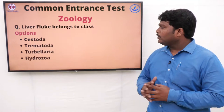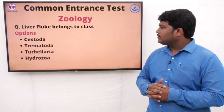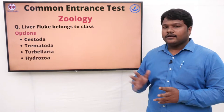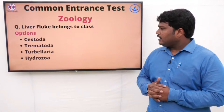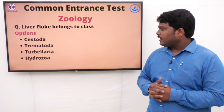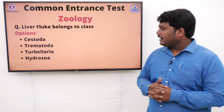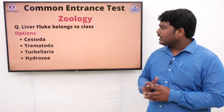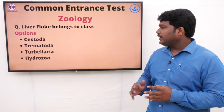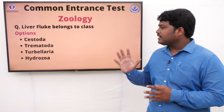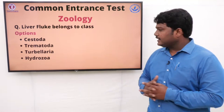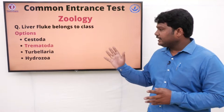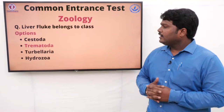Question 31: Liver fluke belongs to class. Options: A) Cestoda, B) Trematoda, C) Turbellaria, D) Hydrozoa. The right answer is Trematoda.